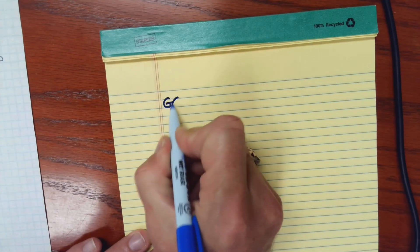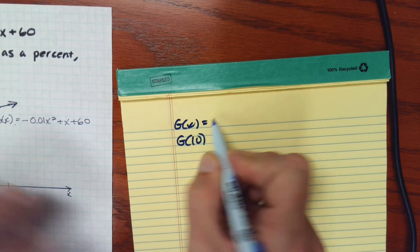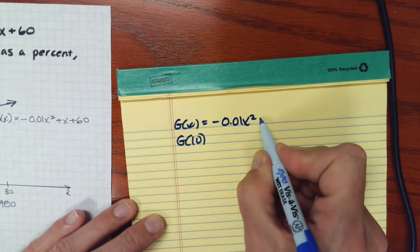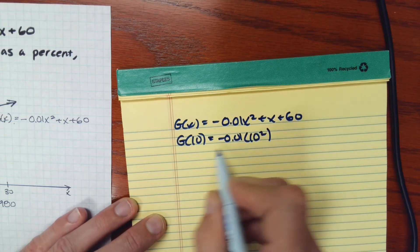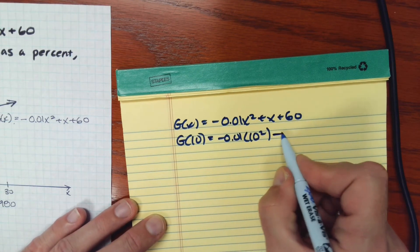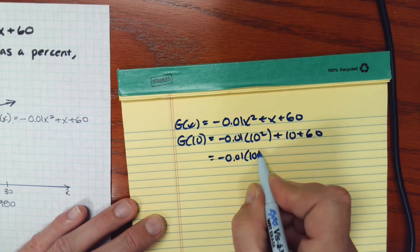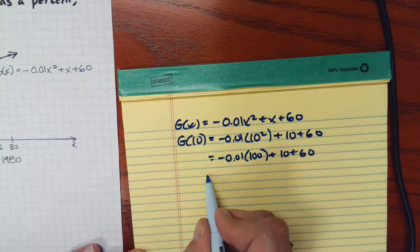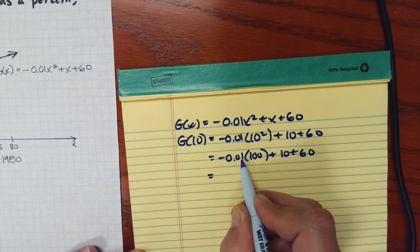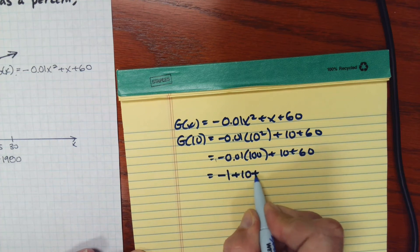So I have g of 10. And I'll just copy down again, g of x was negative 0.01x squared plus x plus 60. So g of 10 would be negative 0.01 times 10 squared plus 10 plus 60. So 10 squared is 100. And when I multiply that by 0.01, that's basically a hundredth of 100. So that would be 1. But there's a negative here. So that would be negative 1 plus 10 plus 60.